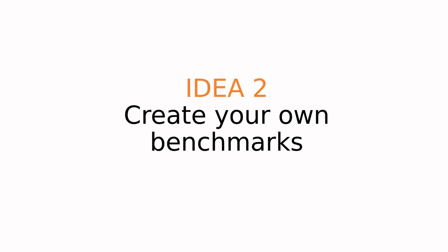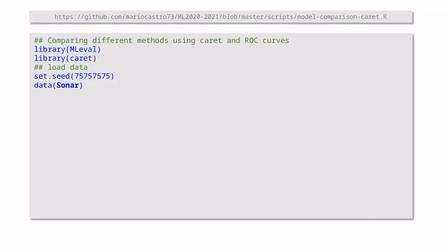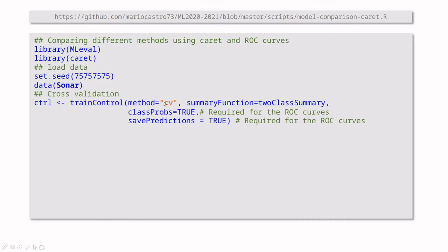Idea number two, I think the best choice is take your dataset and create your own benchmark. So let me illustrate you how to do this. You can download this code from this address in my GitHub account. Basically, I'm going to use caret for fitting and ML eval, machine learning eval, to evaluate the performance of different methods. So I'm going to use a famous dataset called Sonar, and I'm going to fix the seed in order to help you replicate my results. Basically, I'm going to use cross-validation, and I'm going to include just a couple of summary functions: accuracy and kappa. And I'm going to store the probabilities when available and predictions when available.